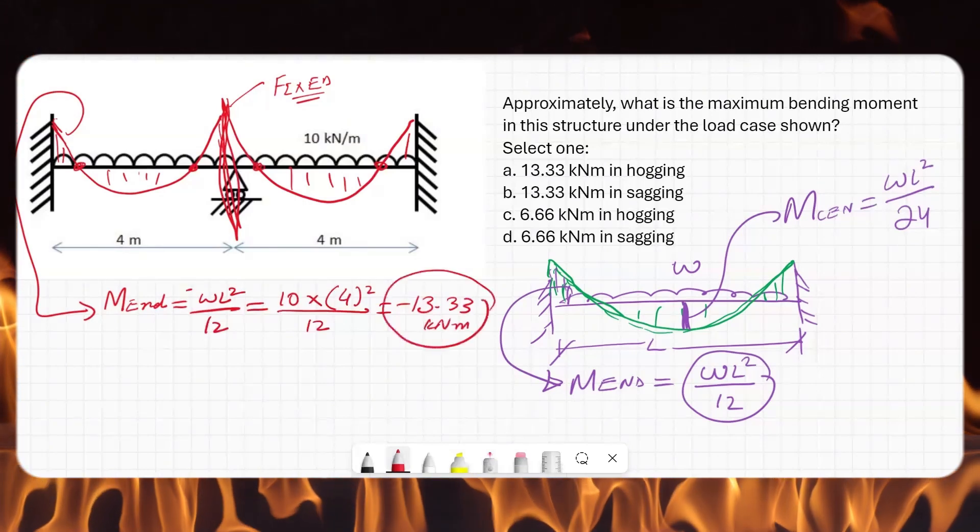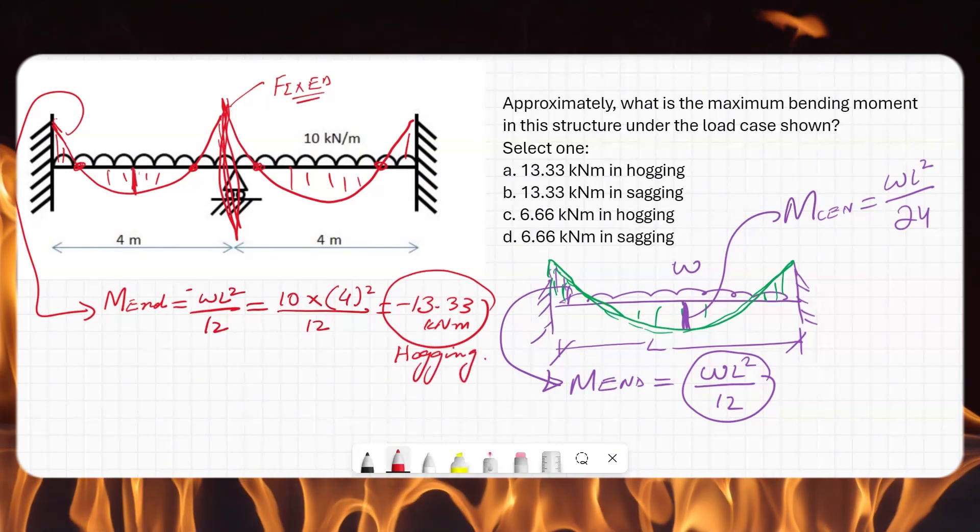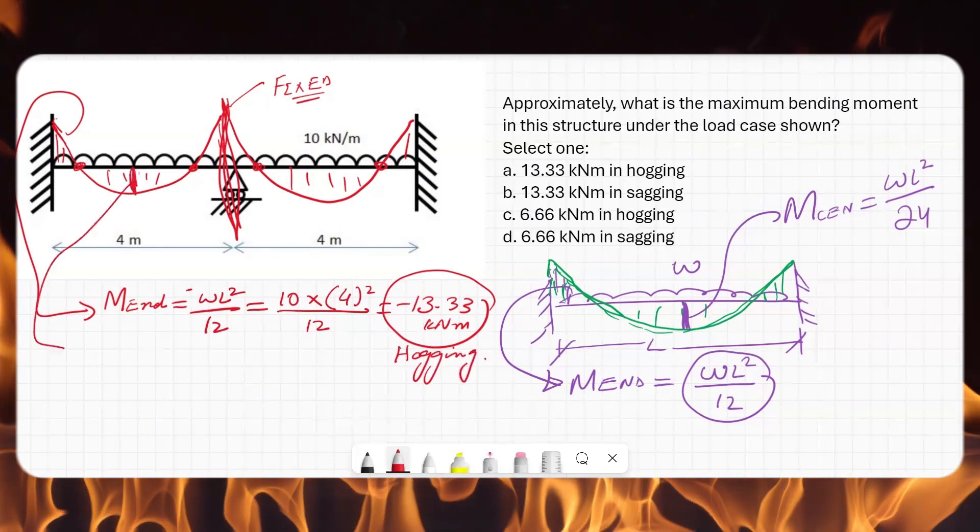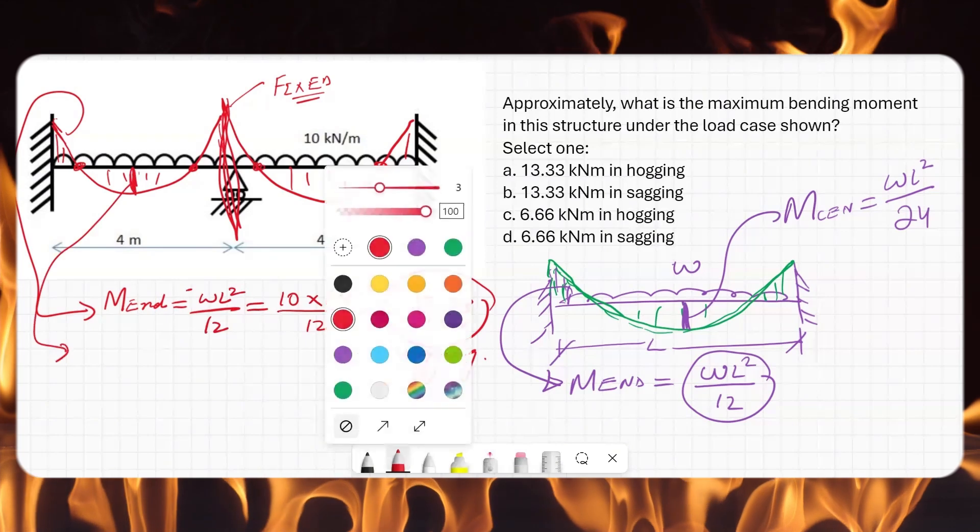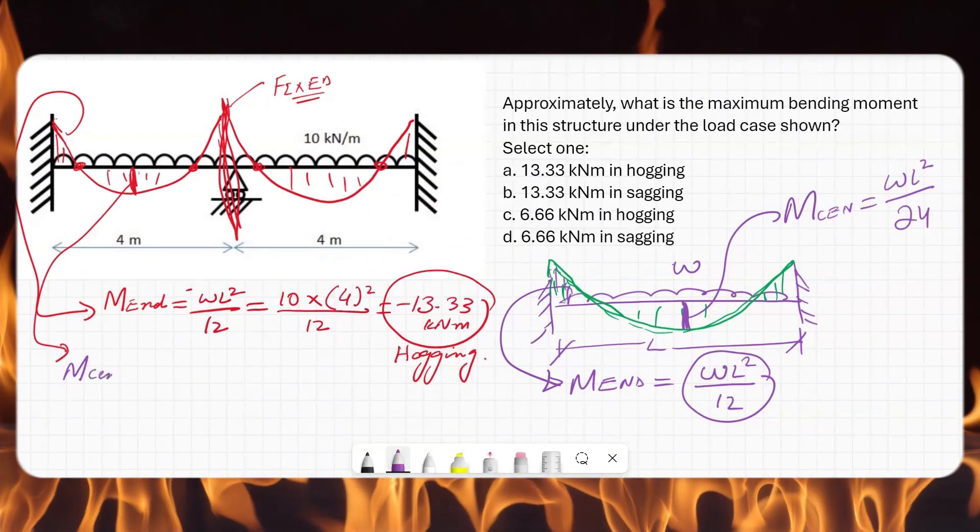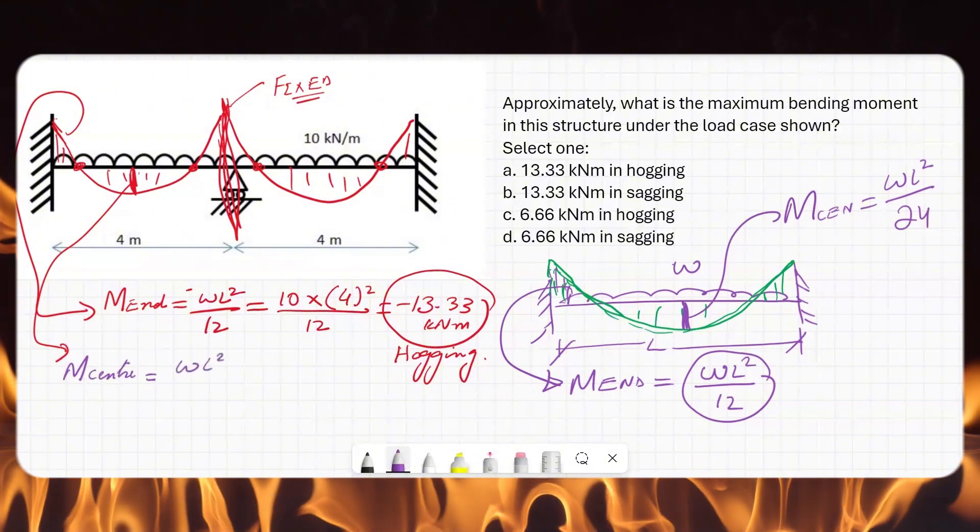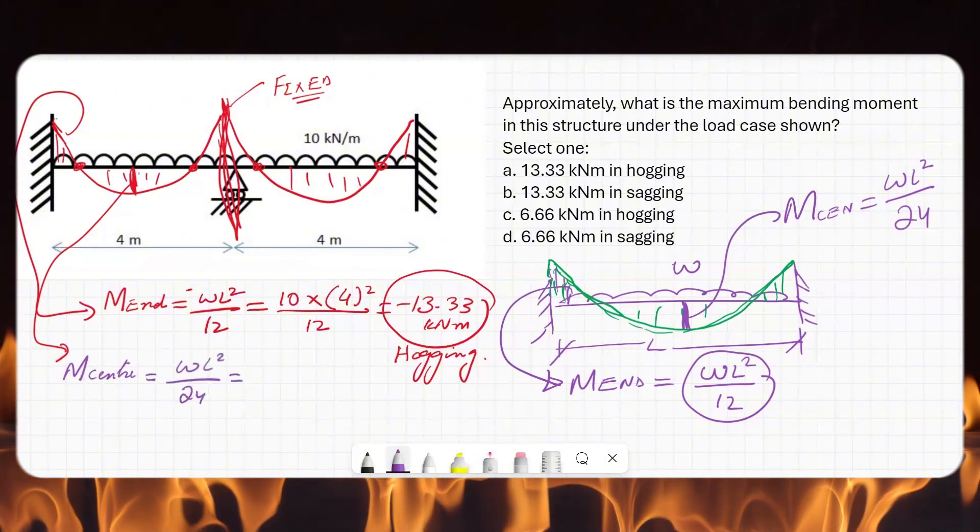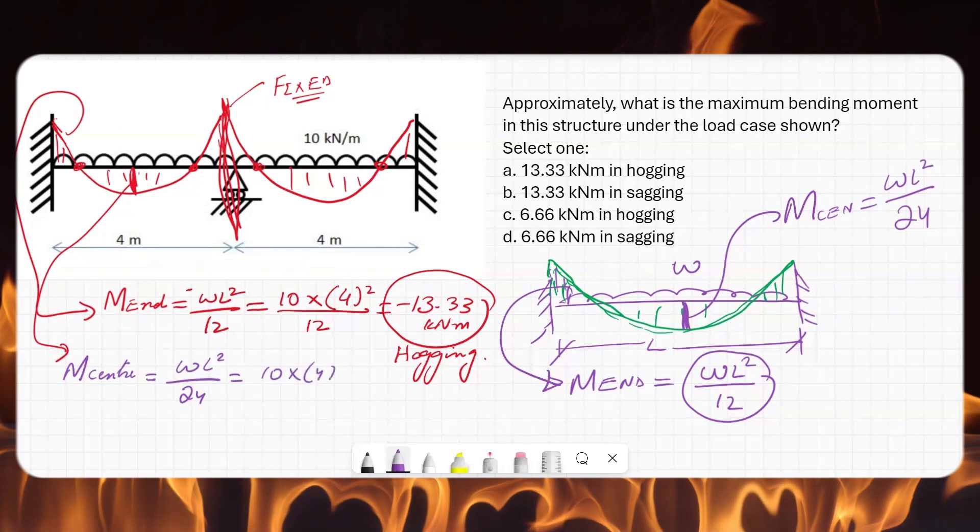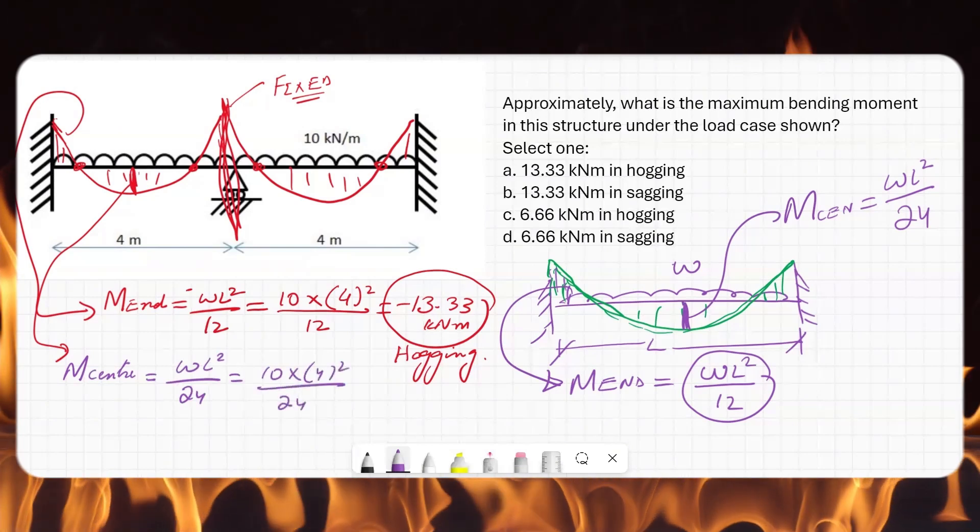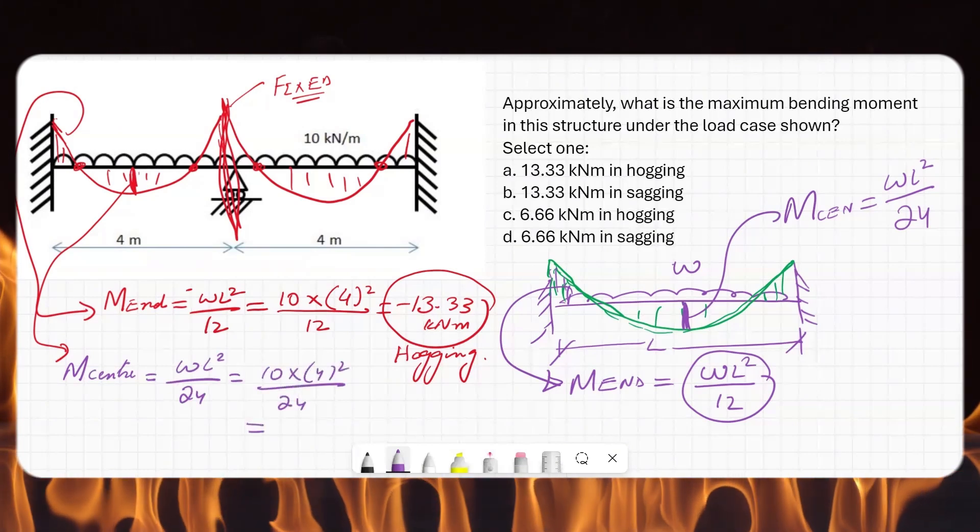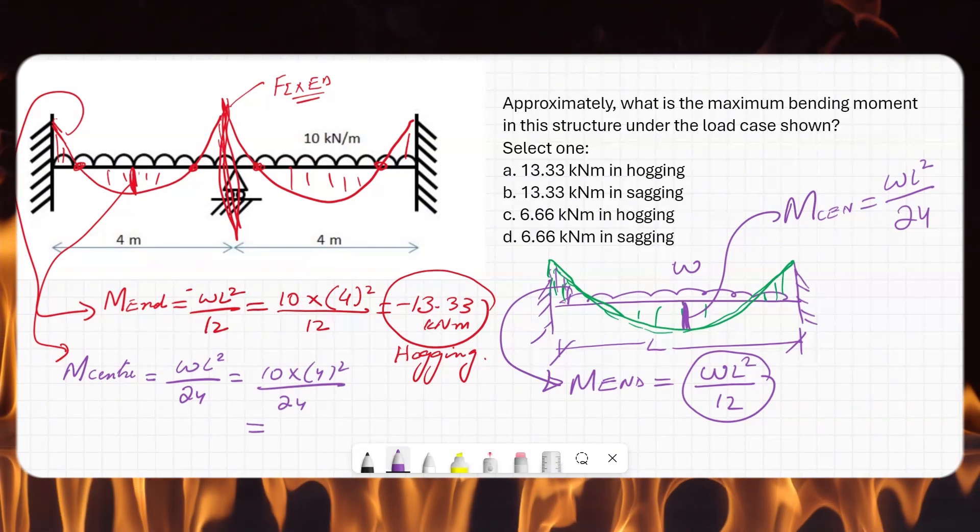How about if I want a sagging moment at the center? That sagging moment will be equal to the maximum bending moment. Will be equal to M at the center equals wl²/24: 10 into 4² divided by 24. That will be half of 13.33, so that will be 6.66, and this will be sagging.